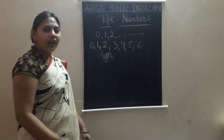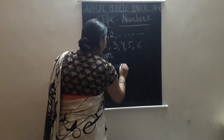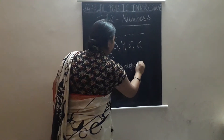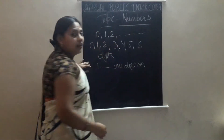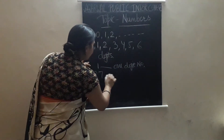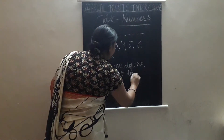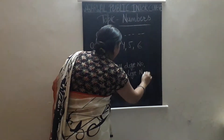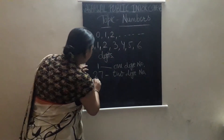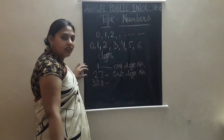If we write 1, this is a 1-digit number. If we write 27, this is a 2-digit number. If we write 328, this is called a 3-digit number.